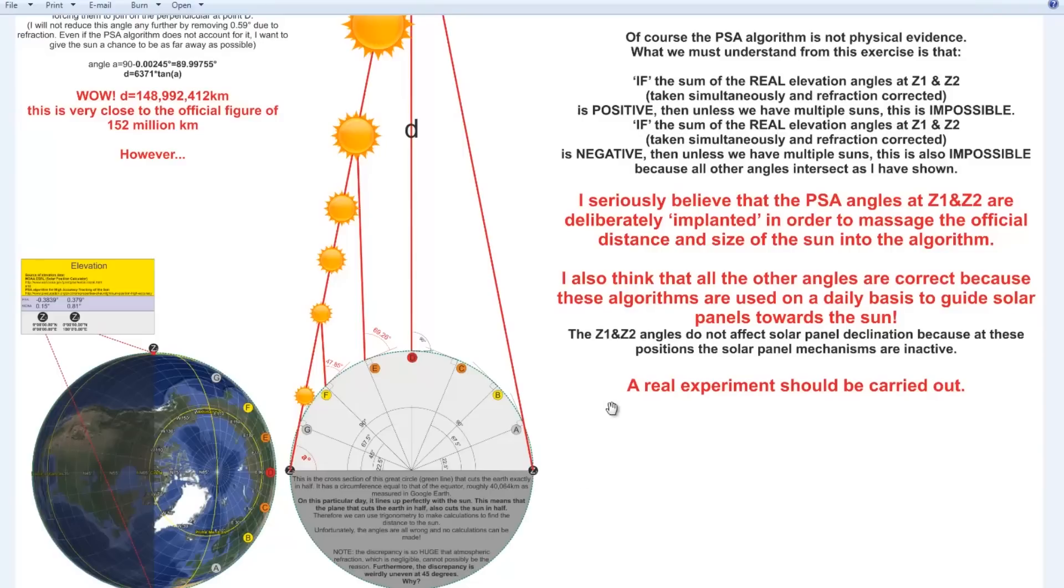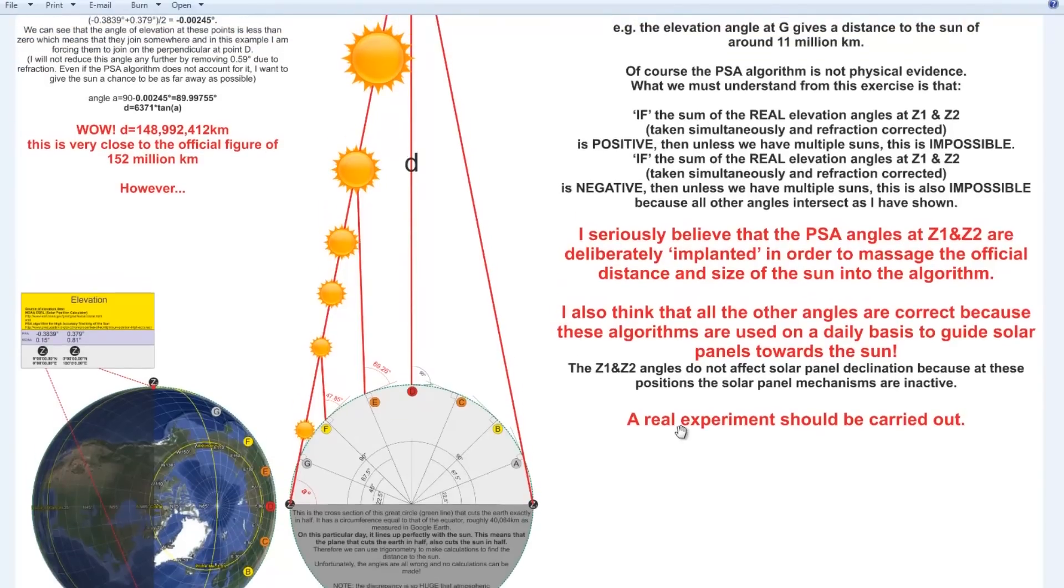I seriously believe that the PSA angles at Z1 and Z2 are deliberately implanted in order to massage the official distance and size of the Sun into the algorithm. I also think that all the other angles are correct because these algorithms are used on a daily basis to guide solar panels toward the Sun. The Z1 and Z2 angles do not affect solar panel declination because at these positions the solar panel mechanisms are inactive, but a real experiment should be carried out.